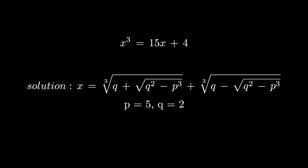Here, p is 5 and q is 2. So p cubed is greater than q squared, meaning that we have a negative number under square root in our formula.